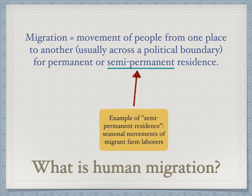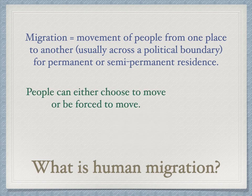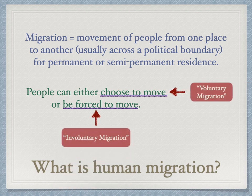Semi-permanent residence would be something like the seasonal movements of migrant farm laborers. People can either choose to move, which is called voluntary migration, or be forced to move, which is involuntary migration.